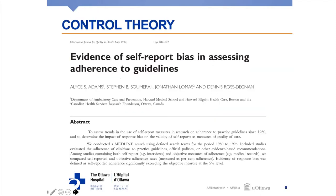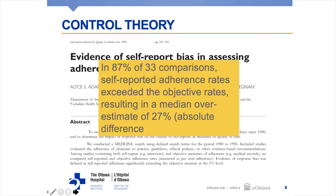There was a very interesting systematic review done by American and US colleagues about 20 years ago which showed that if you looked at what healthcare professionals said they did and then looked at their actual performance, in general they were overestimating their performance — they thought they were performing 27% better than they actually were. So if I have a goal to ensure 90% of my patients after a heart attack are taking preventive medication, but I'm only achieving 63%, I might internally think I'm doing okay because I assume I'm getting up to 90%.